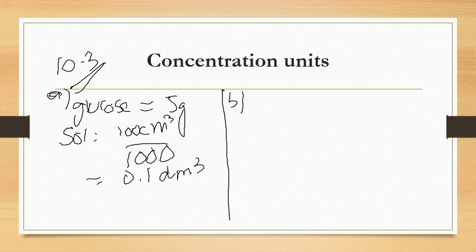The formula for molarity relates the number of moles, which equals grams of solute divided by molar mass of solute, into decimeter cube of solution. We will use this formula. Your formula is for molarity.